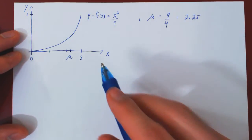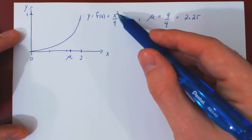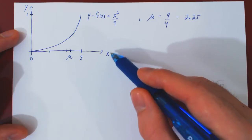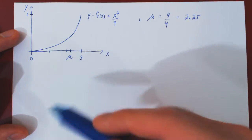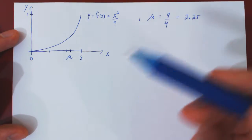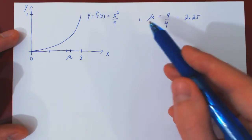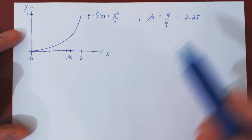Okay, so recall that in the previous two videos, we first proved that the function x squared over 9 is a probability density function for the random variable x over the interval from 0 to 3, and in the following video, we also found the mean, the expectation of x, or the average value of x, and we found mu to be 9 over 4, or in decimals, 2.25.